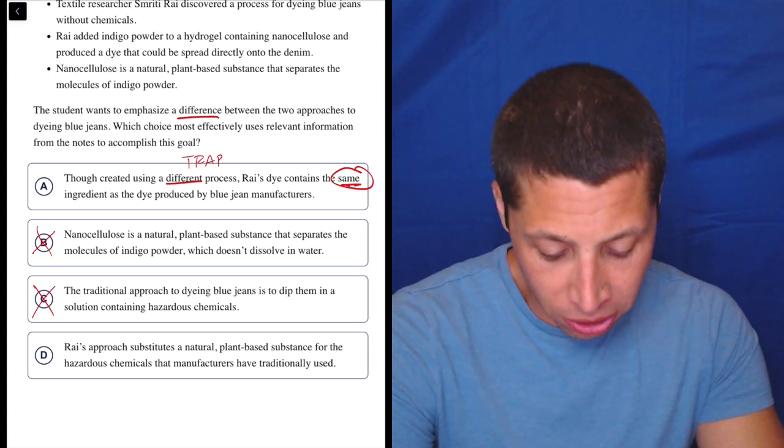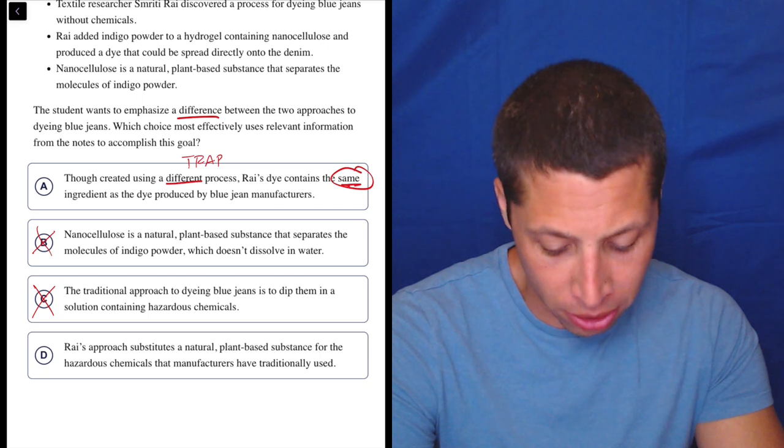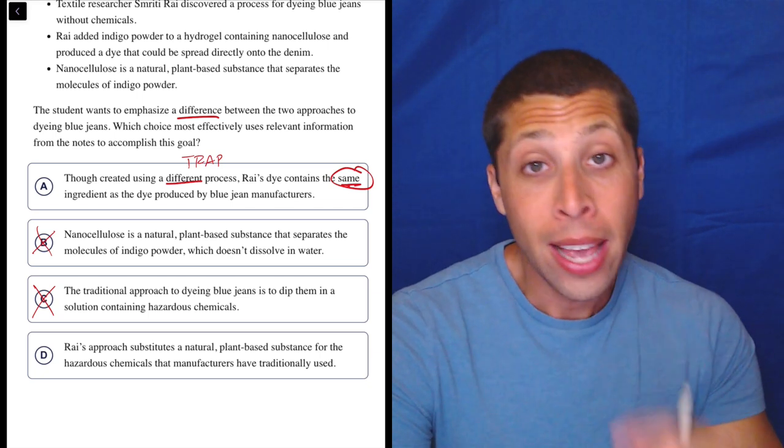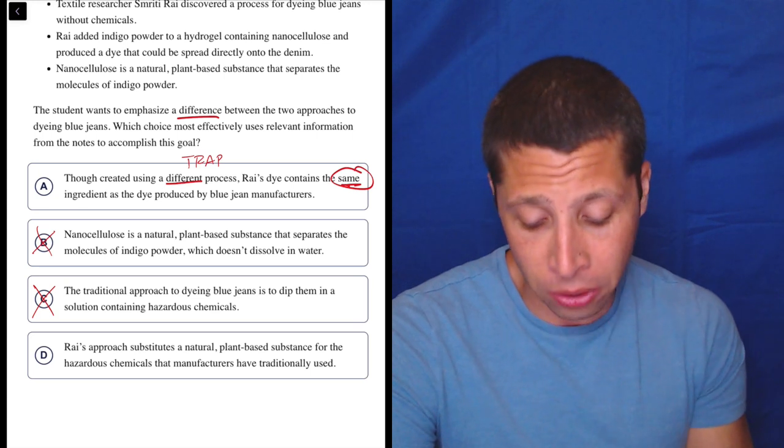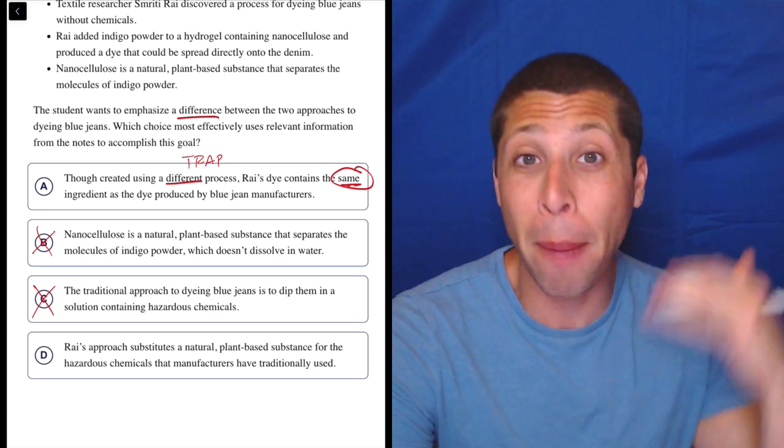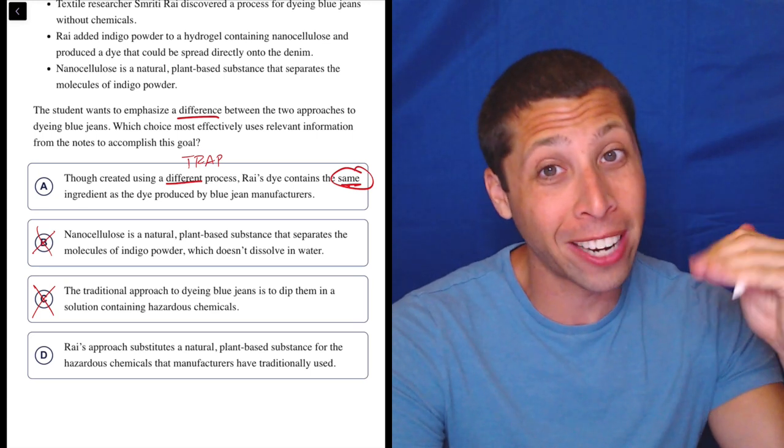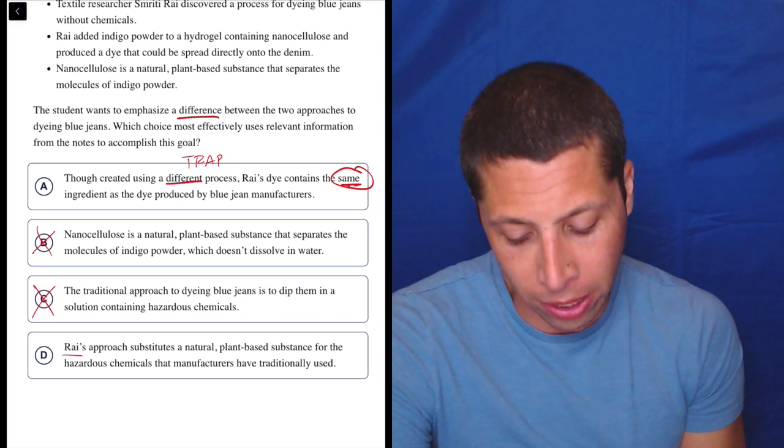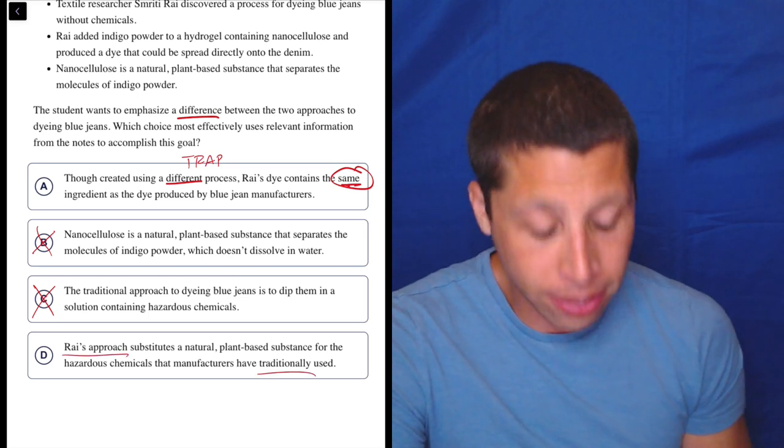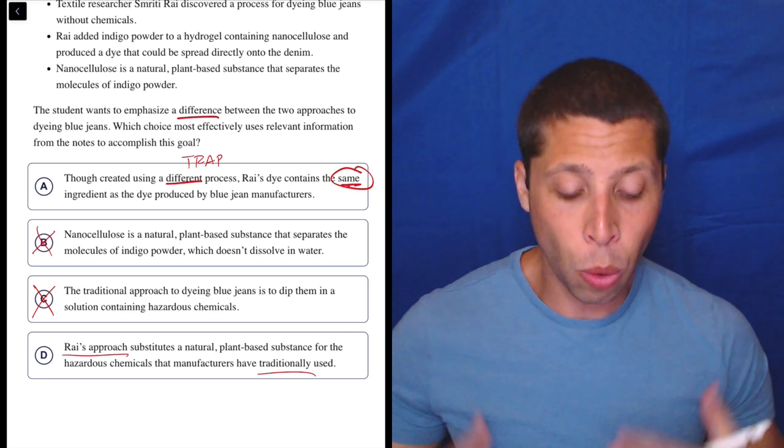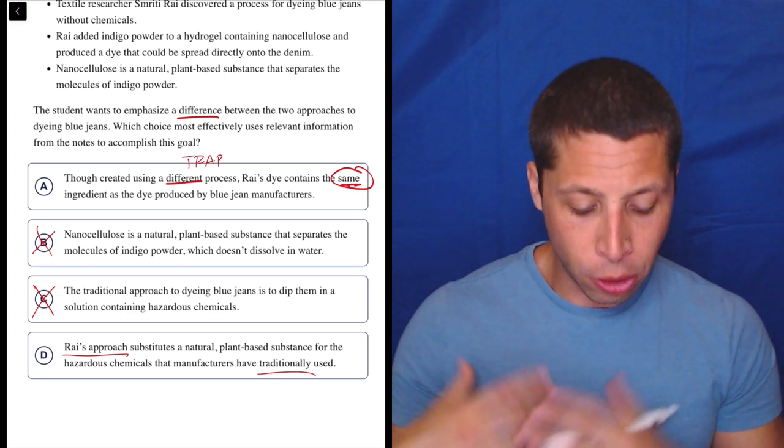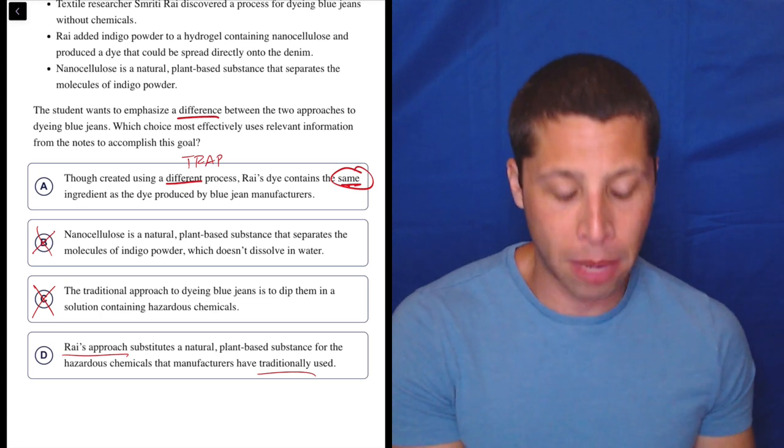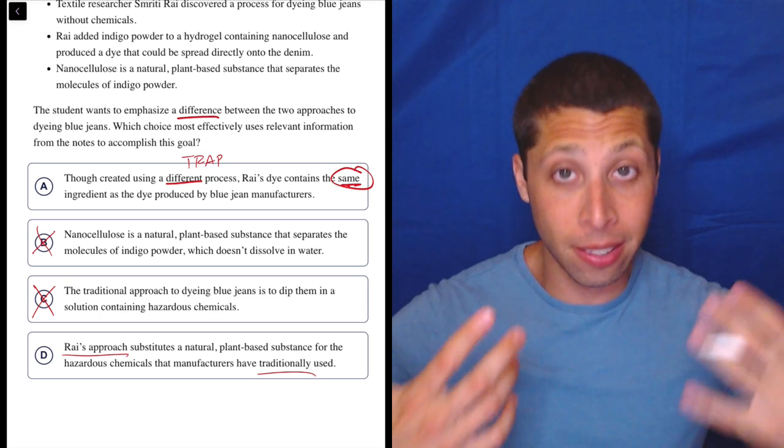D. Rye's approach substitutes a natural plant-based substance for the hazardous chemicals that manufacturers have traditionally used. So it's a little sneaky, and this is why I'm even more certain that A was deliberately set up to be a trap and put early so you might just skip and not read the other choices. But this one here does have two approaches. It is Rye's approach, obviously, and it does talk about the traditional approach. So what is the difference between them? Well, the traditional approach uses hazardous chemicals. Rye's approach substitutes a natural plant-based substance. So it does say the difference there.